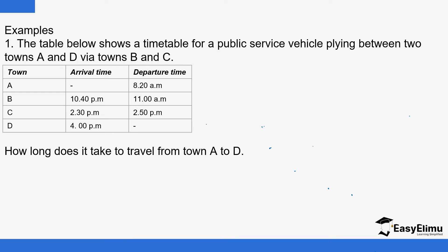This is how a travel timetable looks. You can see Station A — that could be a bus stop or a bus station. Moving from A to B, if you had a journey starting from A to D, it would be a bus travelling from town A to town D.